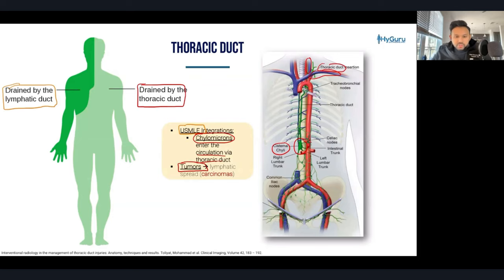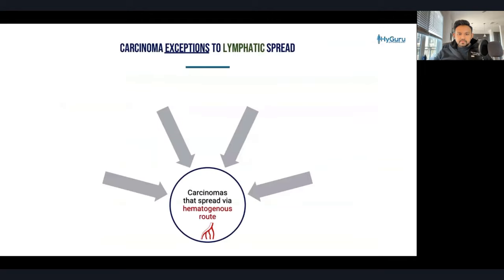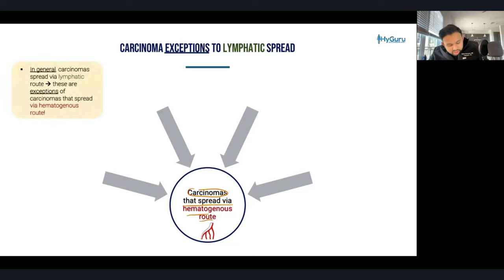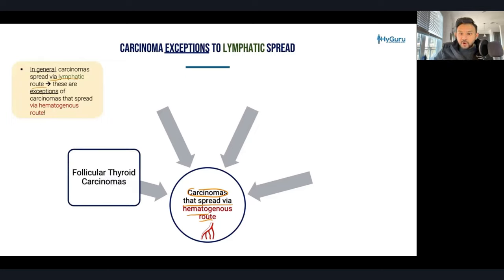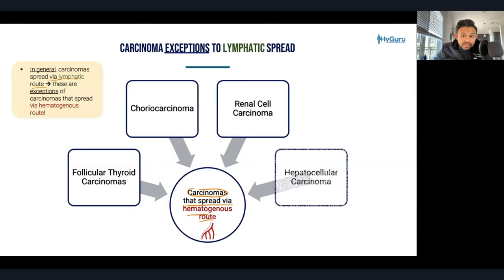Tumors can also spread via lymphatics. The specific tumors that spread via lymphatics are carcinomas — carcinomas usually spread via the lymphatic system. However, there are exceptions that the USMLE loves to test. Some carcinomas spread via the hematogenous route: follicular thyroid carcinomas, choriocarcinomas, renal cell carcinoma — watch for invasion of renal vessels and bilateral varicocele — and hepatocellular carcinoma.